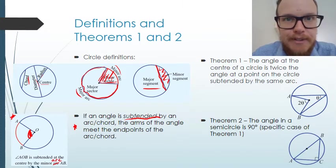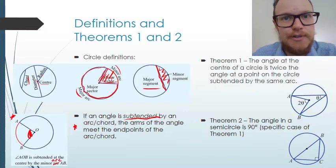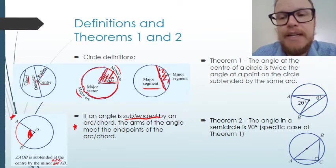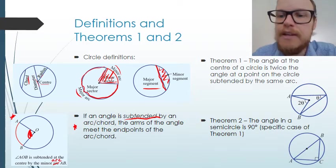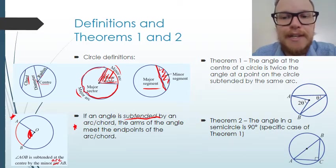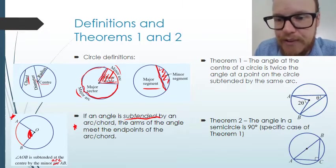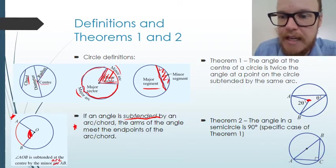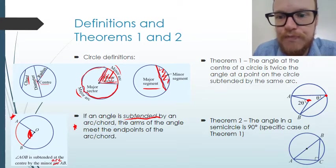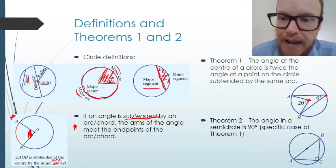Now let's look at the first two theorems. Theorem one states that the angle at the centre of a circle is twice the angle at a point on the circle subtended by the same arc. So if we have the centre of the circle and a point on the circle, they are subtended by the same arc.